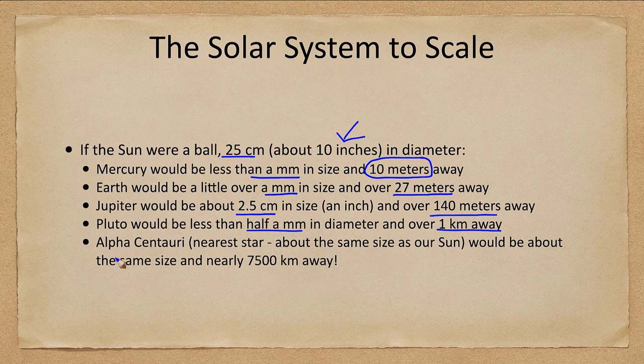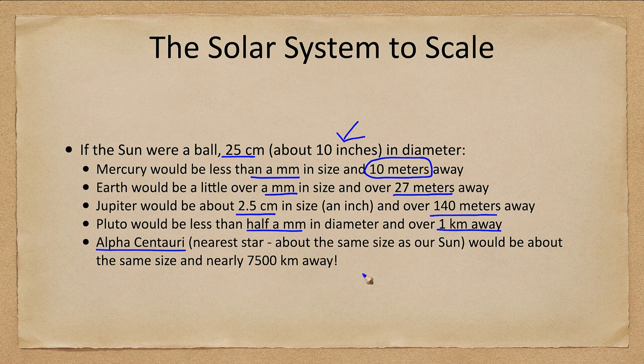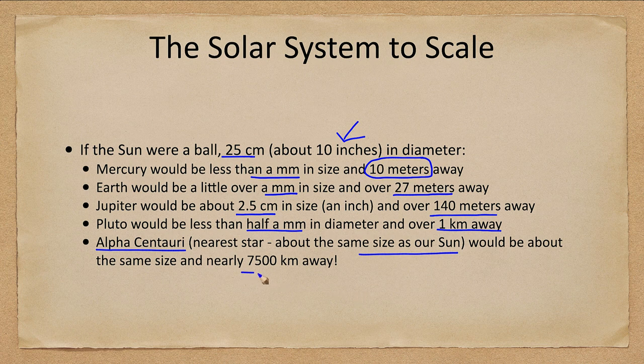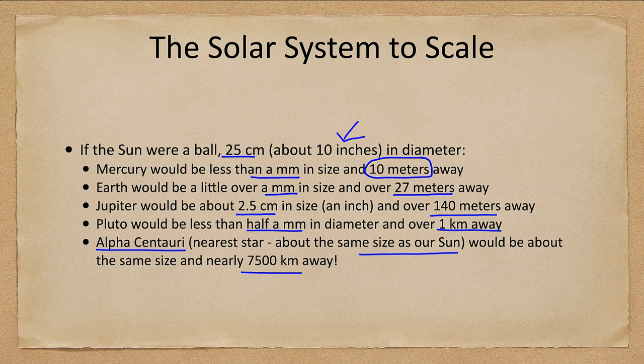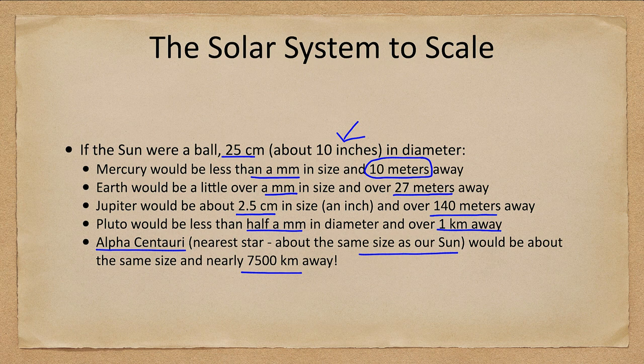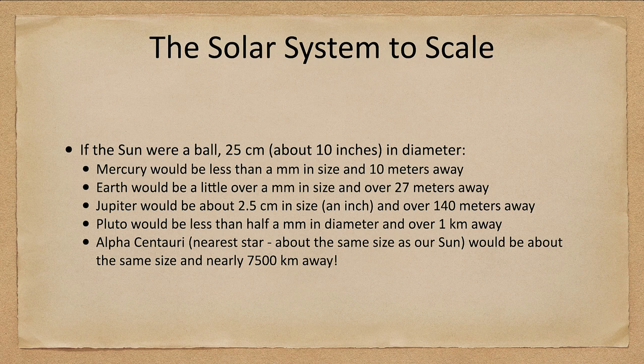Now if we continued on, we'd have Alpha Centauri, which is the nearest star close in size to our sun, so about another 25 centimeters, and would be 7500 kilometers away. So on the surface of the Earth, that's a good chunk of the way around the surface of the Earth. So in between those, just a few little specks. Again, most of the universe as we looked at previously, and the solar system and the universe is mostly empty space.